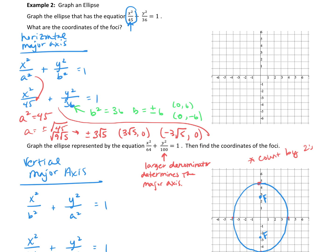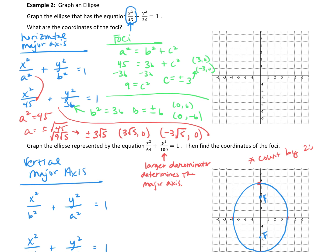The last thing we need is the foci. We know that a squared equals b squared plus c squared. a squared is 45, b squared is 36, and we solve for c. 45 minus 36 is 9, so c squared equals 9. Square rooting both sides, c equals positive and negative 3. Because our major axis is horizontal, those are x values, so the foci are (3, 0) and (-3, 0).